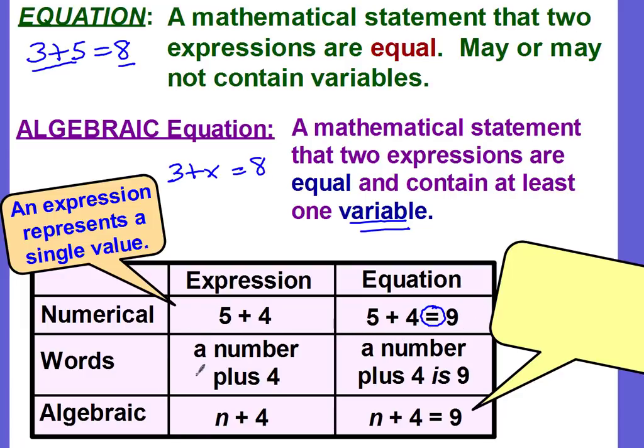In words, the expression would be a number plus 4. We don't know what it equals, do we? It's just an expression. Algebraic would be n plus 4. It has the variable.